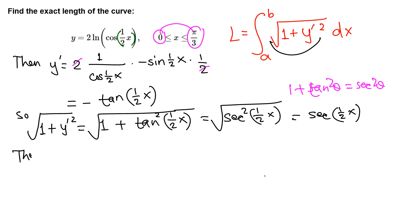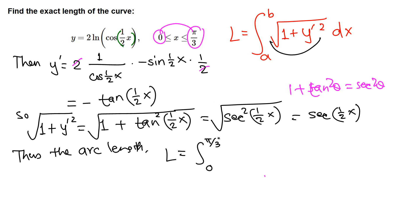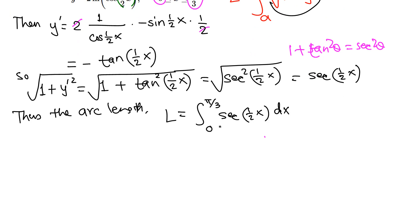Now we have everything needed. The arc length, or length of the curve, is the integral from 0 to π/3 of √(1 + (y')²) dx, which equals the integral from 0 to π/3 of sec(x/2) dx. Next we need to integrate secant.